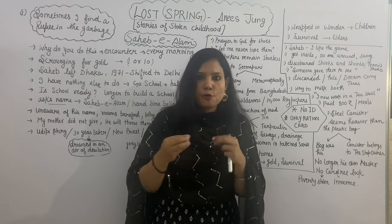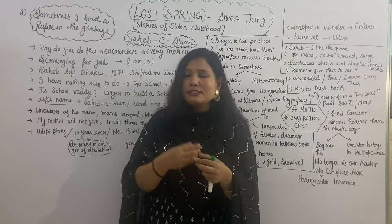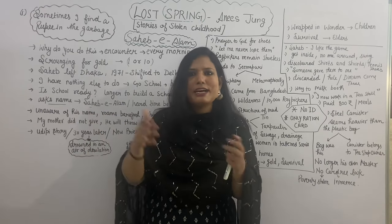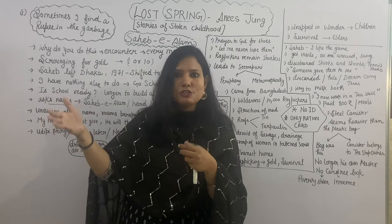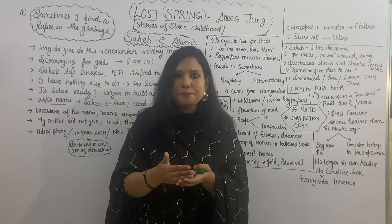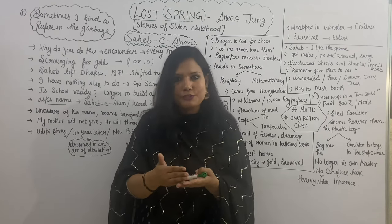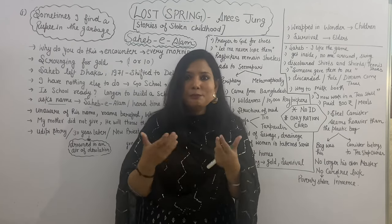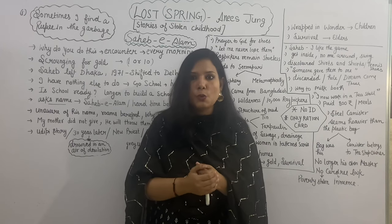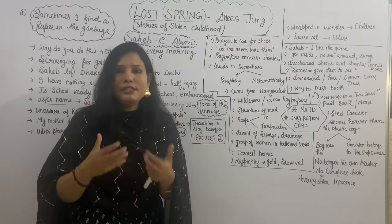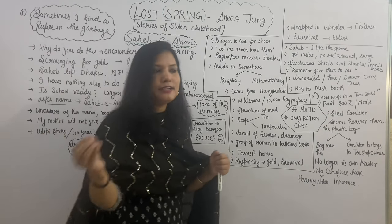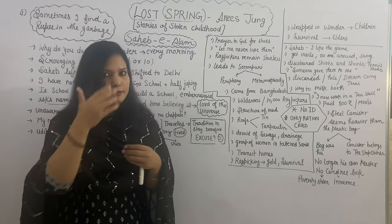Saheb-e-Alam originally is from Dhaka. Dhaka is the capital of Bangladesh, but since a war happened in 1971, many Bangladeshis left Bangladesh. Many people left and became refugees in India. They came and settled in Seemapuri, which is on the periphery or outskirts of Delhi. They settled there but without legal permission, so you can say these Bangladeshi people were squatters — squatter means having no legal permission to live. Saheb-e-Alam is amongst them; his family also came from Bangladesh and shifted to Seemapuri at the border of Delhi.